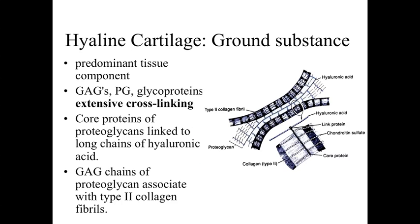Looking at the ground substance — a characteristic component of connective tissue — we've got the cells, the chondrocytes; the fibers, in this case type 2 collagen; and the ground substance. In hyaline cartilage, the ground substance is the predominant tissue component. We're going to have glycosaminoglycans, proteoglycans, and glycoproteins — proteins with lots of sugars. The presence of all these sugars allows for lots of cross-linking and interactions, and also draws in a lot of water, making this a very hydrated tissue.